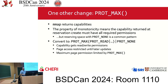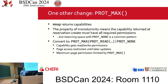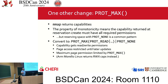FreeBSD already had an internal mechanism for this — when you mapped certain file types you couldn't upgrade the mapping beyond what the file could support. We exposed it and made it explicit. ARM Morello took a different approach: in their Linux port they just return RWX capabilities and you need to reduce them yourself, because they didn't feel confident in their ability to get the Linux community or GLIBC to adopt PROT_MAX.